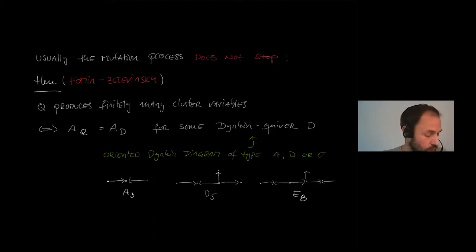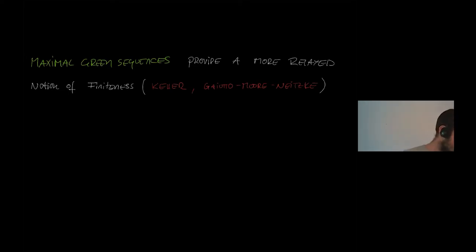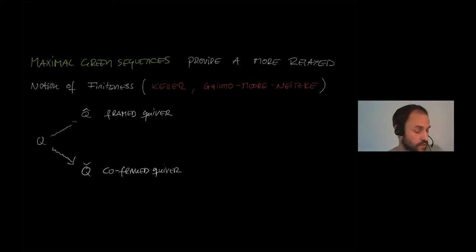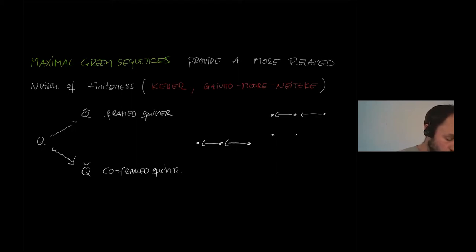There is however a second notion of finiteness due to Keller, also appearing implicitly in work of Gaiotto–Moore–Neitzke, called maximal green sequences. This is a broader notion of finiteness. For this, we start with the quiver Q and associate to it a framed and a co-framed quiver. For example, if you take the A3 quiver, you obtain the framed quiver by adding a copy for each vertex, with arrows from each vertex downstairs to the new copy. The co-framed is the dual construction.